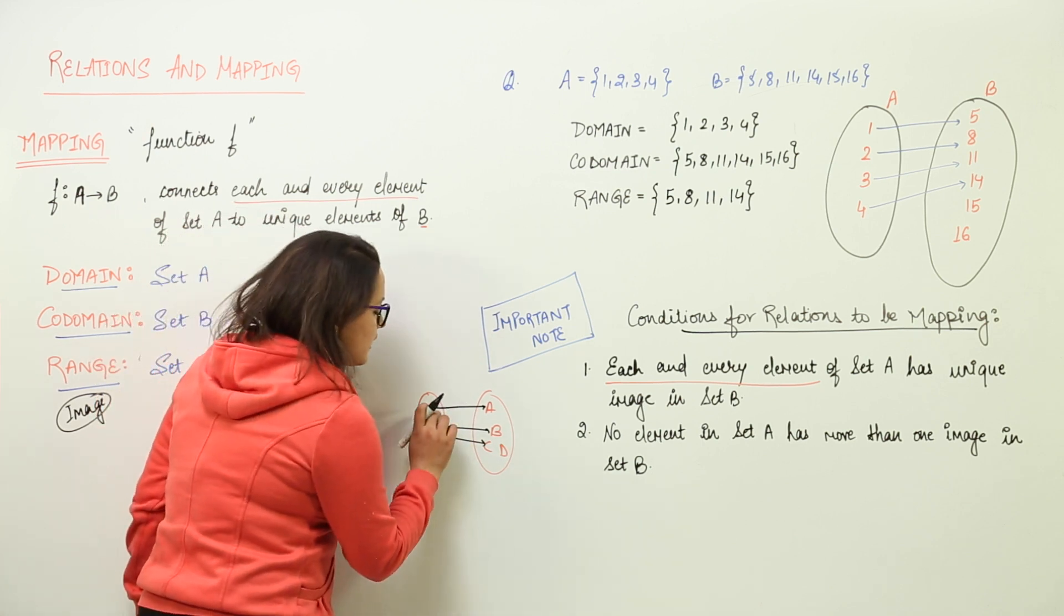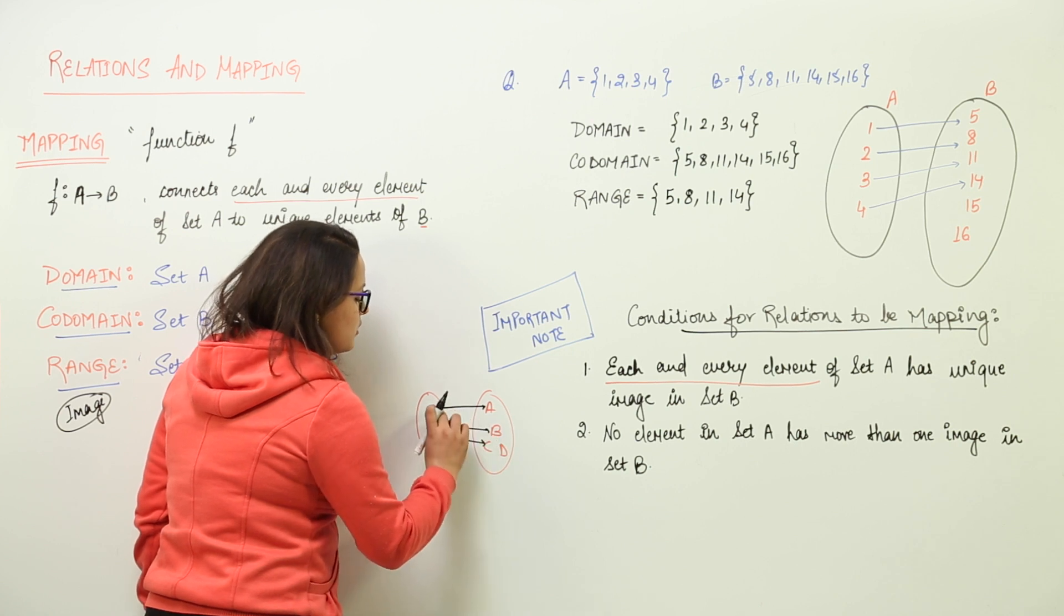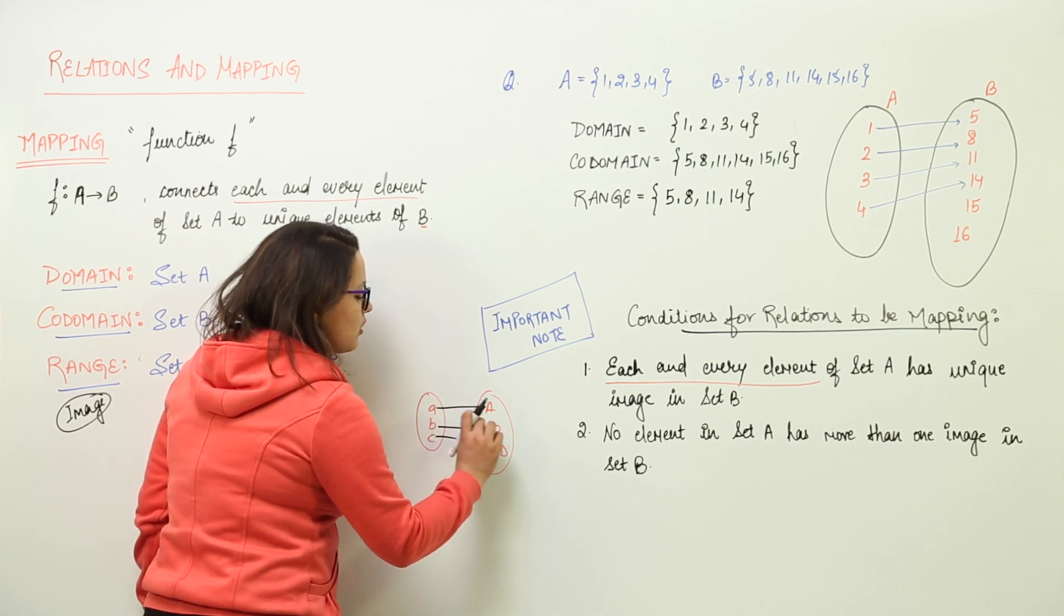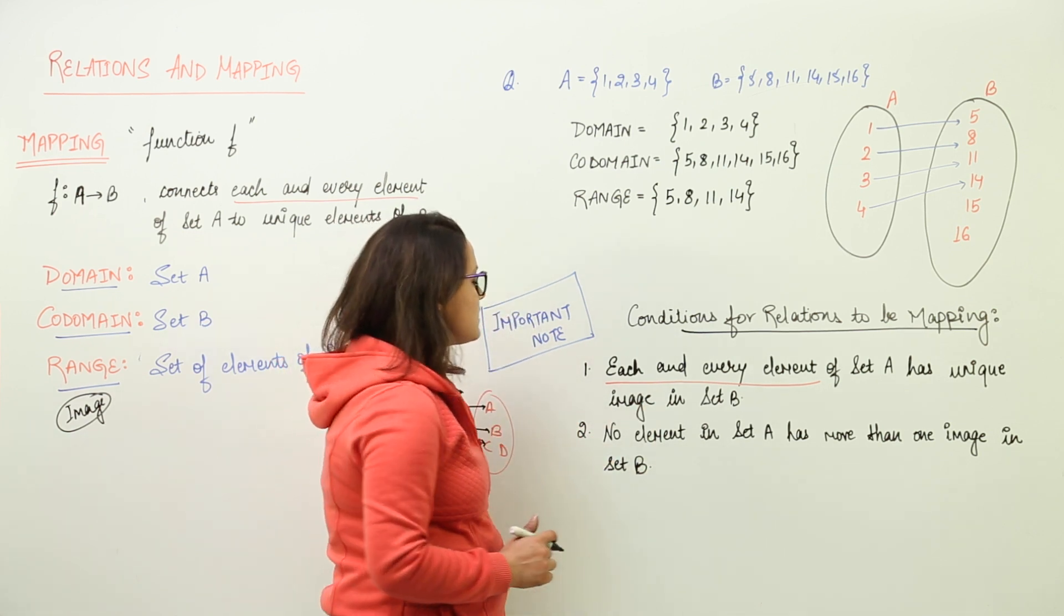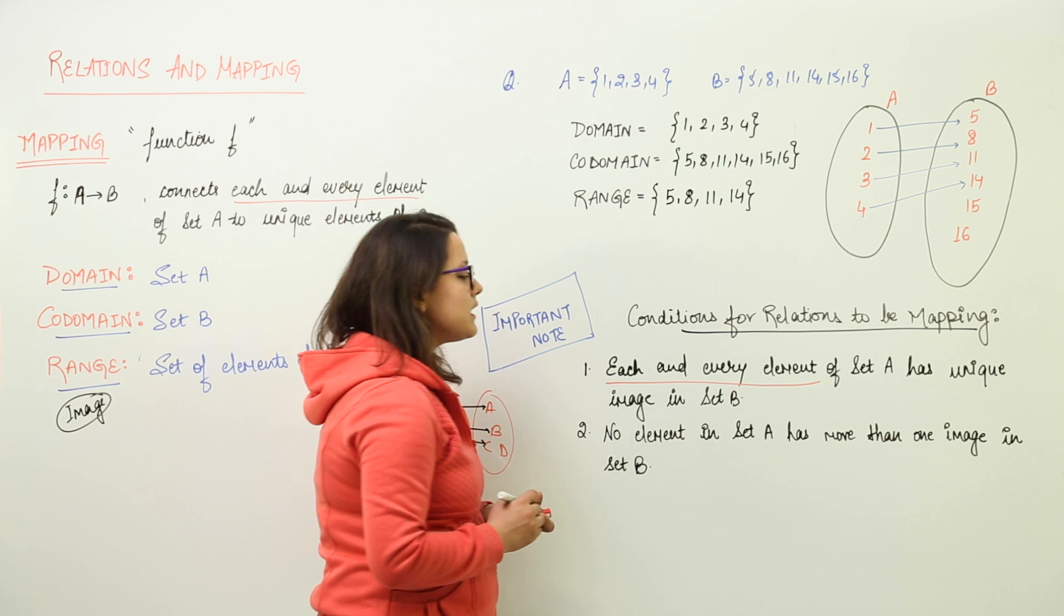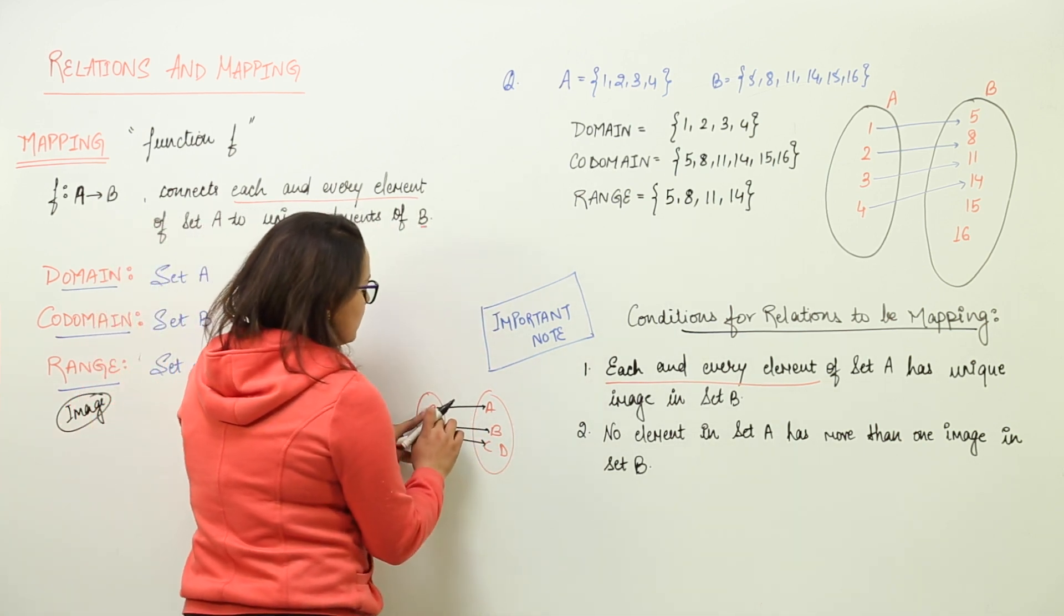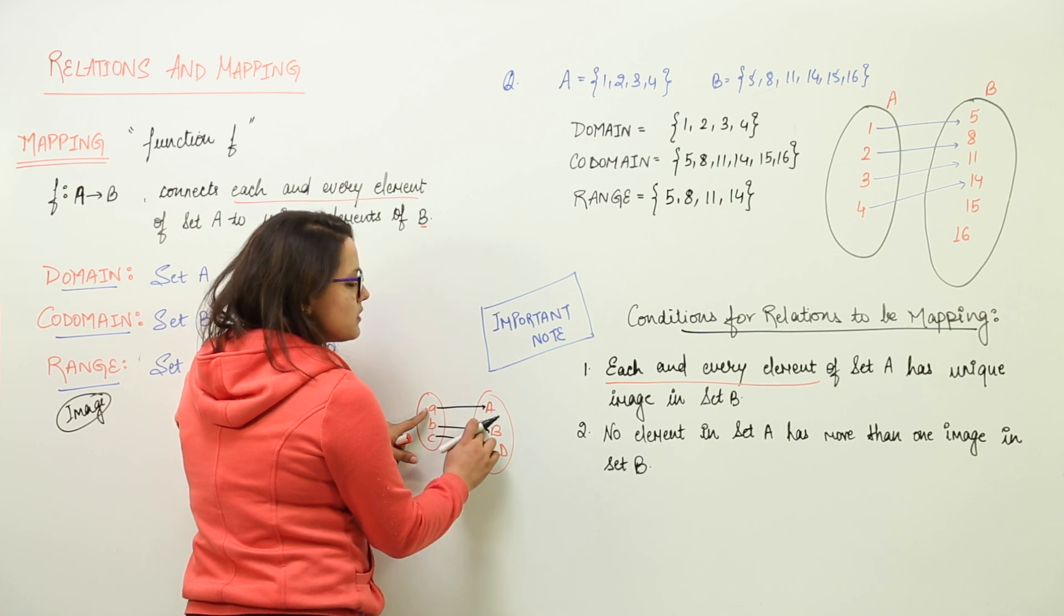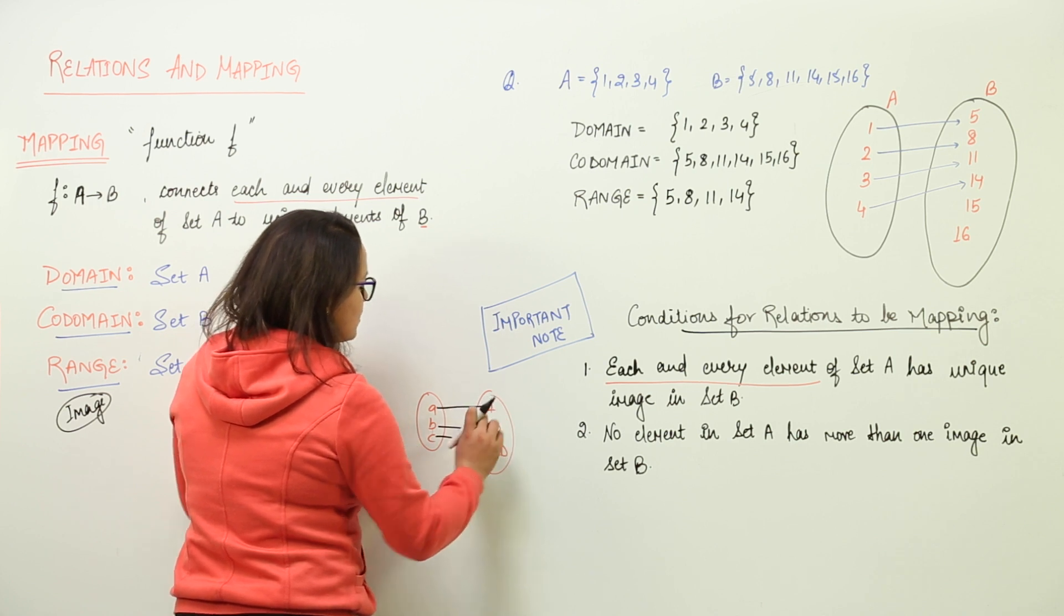What I mean to say that A cannot have image as A and image as B. The two domains cannot have the same image. And the last one is that no element in set A has more than one image. No element here. A cannot have two images. And similarly, each and every element must have an image.